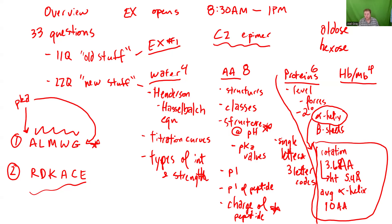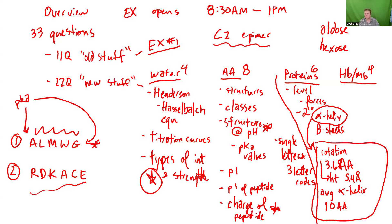For tertiary and quaternary structure, it's important to know types of interactions — which takes us back to interaction types and strengths, but now in the context of amino acids. Histidine and aspartic acid — polar positive and polar negative residues — will interact with one another in ionic interactions to stabilize tertiary structure. Leucines, valines, and isoleucines would be stabilized by the hydrophobic effect.